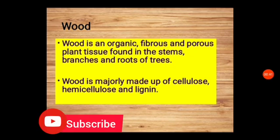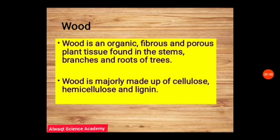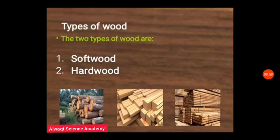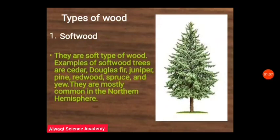Wood is mainly composed of organic compounds including cellulose, hemicellulose, and lignin. There are two major types of wood: softwood and hardwood. Softwoods are the soft types of wood — they are soft in nature and easily worked with tools compared to hardwood.